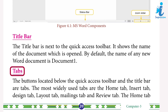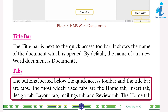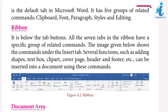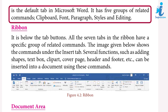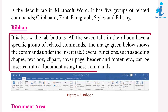Tabs: the buttons located below the Quick Access Toolbar and the title bar are tabs. The most widely used tabs are the Home tab, Insert tab, Design tab, Layout tab, Mailing tab, and Review tab. The Home tab is the default tab in Microsoft Word and has five groups of related commands: Clipboard, Font, Paragraph, Styles, and Editing. The ribbon is below the tab buttons; all seven tabs in the ribbon have a specific group of related commands. The image below shows commands under the Insert tab, including adding shapes, text box, clipart, cover page, header and footer, and more.